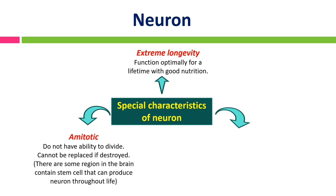Second, amitotic. Neurons do not have the ability to divide, unlike other cells. They cannot be replaced if destroyed. However, there are some regions in the brain that contain stem cells that can produce neurons throughout life, such as the olfactory epithelium, hippocampus, and subventricular region.